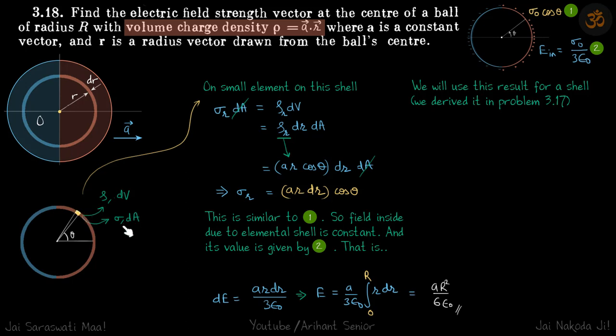So in both ways, we can consider this element and that charge should be same if we calculate it either way. So first is sigma r into dA and second is rho r into dV.